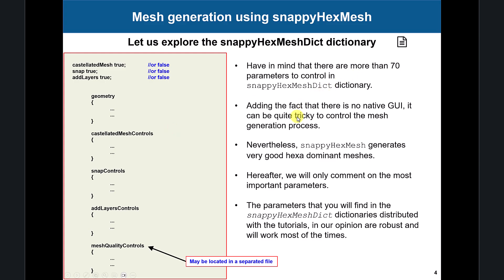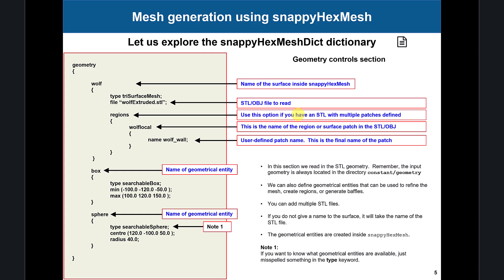I want to stress: I'm not going to address all the parameters — only the most important ones. The rest you can probably use default values for, and do some trial and error to get an idea. Talking about geometry, this is how you read it. You're going to encounter something like this — you read your STL, or it can be OBJ. That STL can be divided into regions. You also have geometrical entities, meaning that within SnappyHexMesh you can create boxes, spheres, cylinders, or read a second STL to create, for instance, a box to do a region refinement.